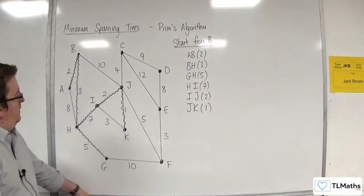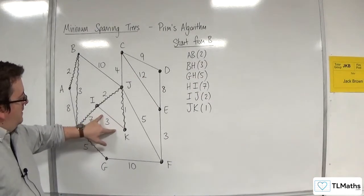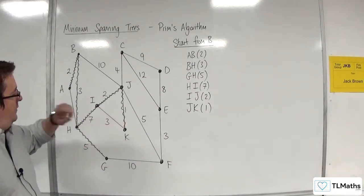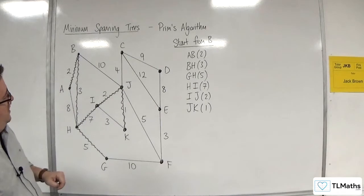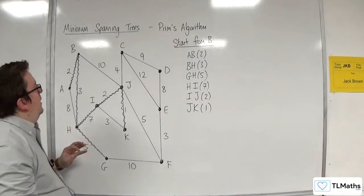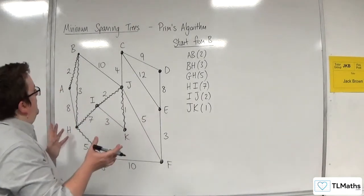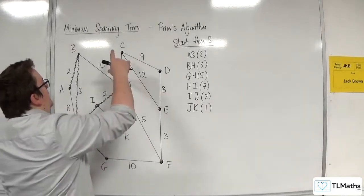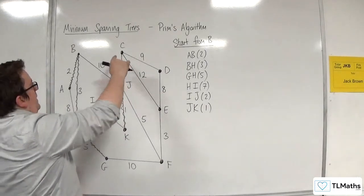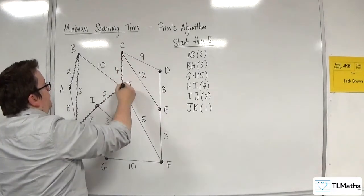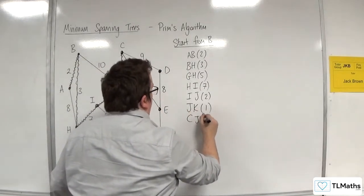We've got that one. We'll never pick IK now because that will create a cycle. So the next shortest one coming out of any that we've visited would be CJ, I think, with 4. CJ with 4.